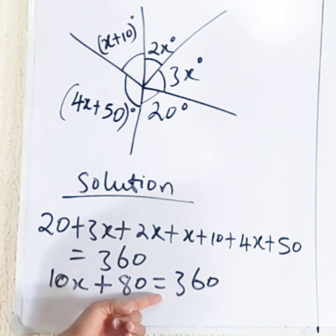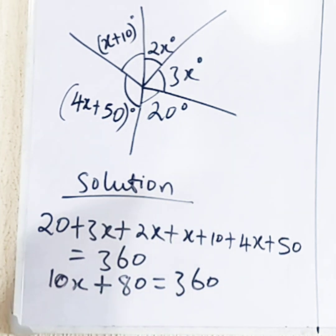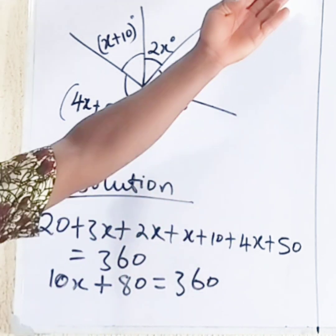10x plus 80 should be equal to 360 degrees. So we have to transfer this equation to this place.